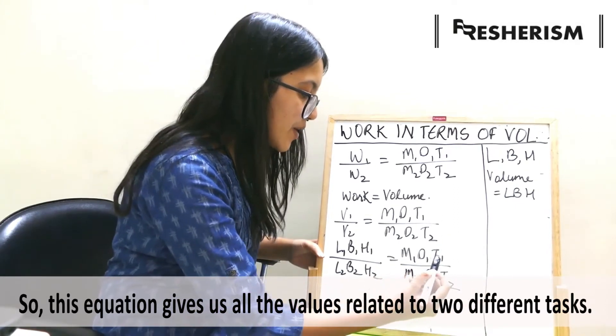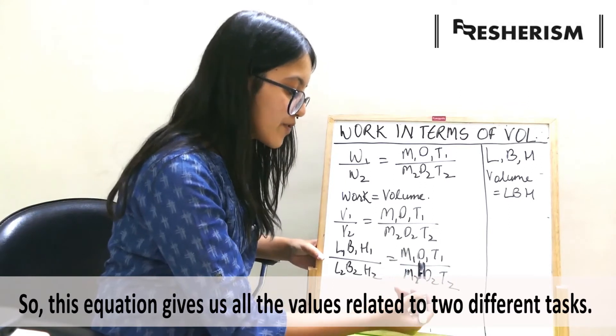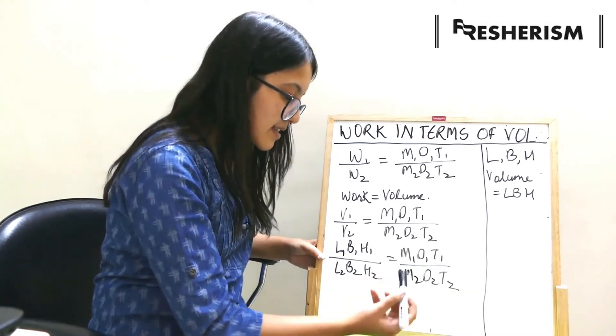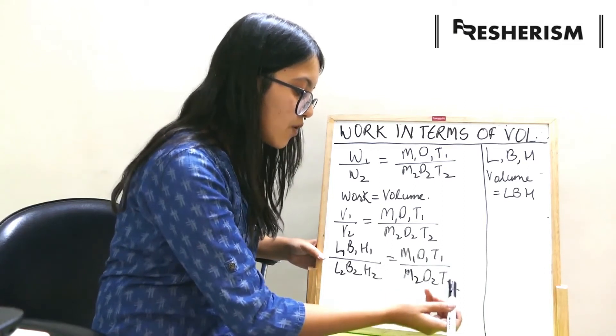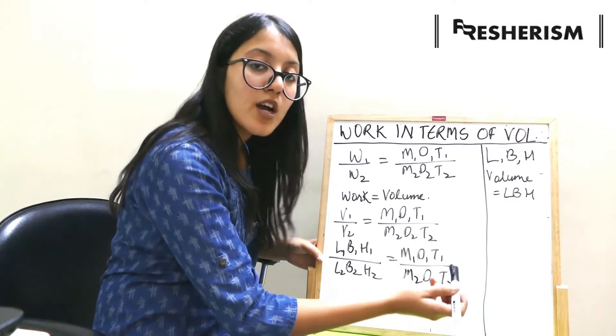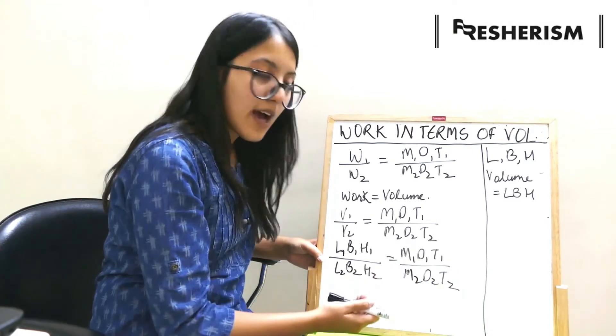On the other hand, we have m1 d1 t1. It is number of men, number of days, and number of time required to complete the related tasks. m2, d2, and t2 are the number of men, number of days, and number of time required to complete the task 2.